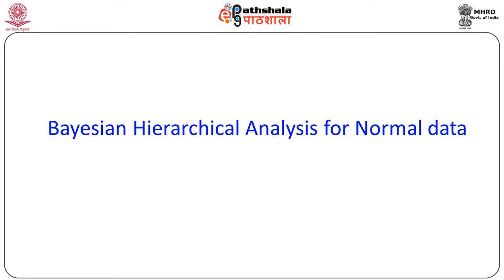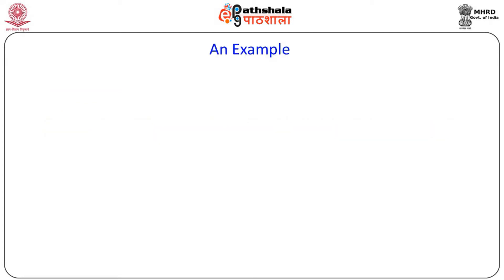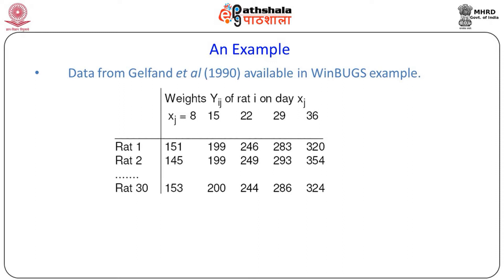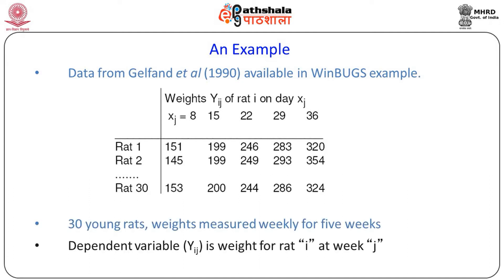Our first analysis is Bayesian hierarchical analysis for normal data. The example is taken from Gelfand 1999, a very popular example available in WinBUGS example code. The data consists of 30 rats, each observed over 5 weeks, with weights recorded at 8, 15, 22, 29, and 36 days after set intervals. This is longitudinal data. The dependent variable is y_ij, the weight of the i-th rat at the j-th week, making this a multilevel dataset.